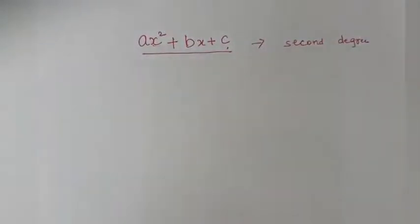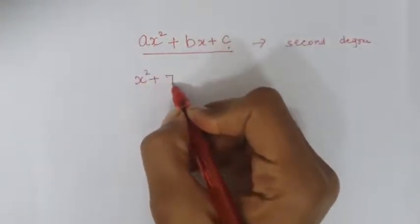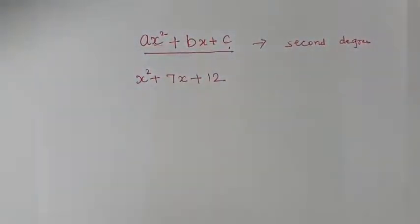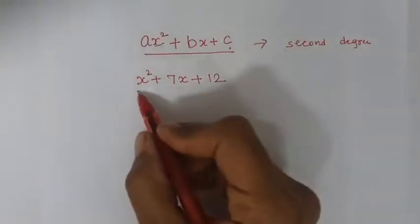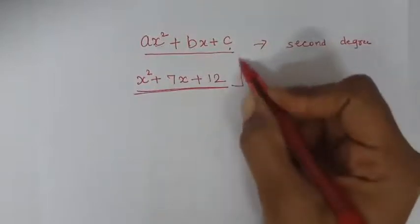Now let us start. How can we factorize the Second Degree Polynomial? Suppose we are given x² plus 7x plus 12 and we have to factorize it. First of all, you will compare the given polynomial with the general polynomial Ax² plus Bx plus C.